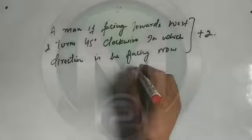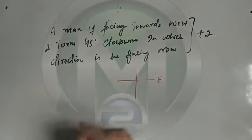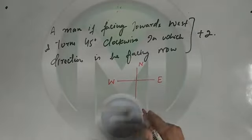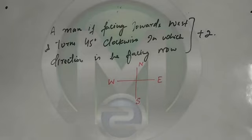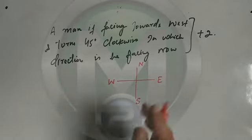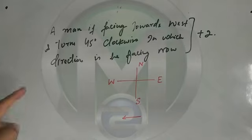First, draw your directions. Your right hand is East, your left hand is West, your facing direction right now — as you sit — is South, and behind you is North. Now the man is facing West, so his facing direction is West.